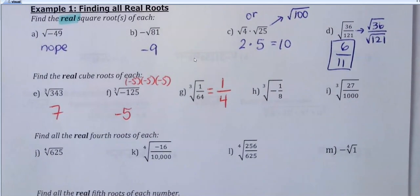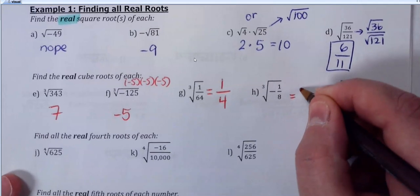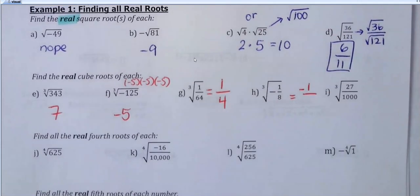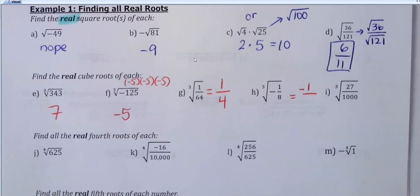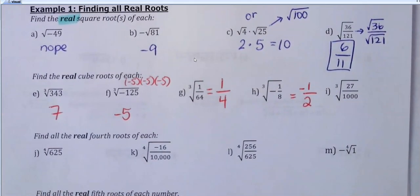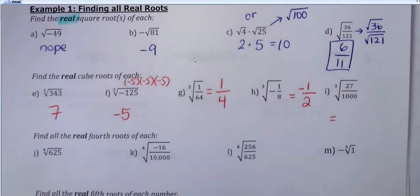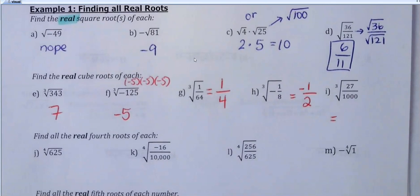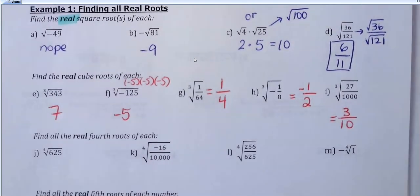I can do the next question because I can take the odd root of a negative number. So the cube root of negative 1 is just negative 1. The cube root of 8 is 2, so this one would be negative 1.5. And then I have the cube root of 27 over 1000 — feel free to look at that chart. The answer is three-tenths. Cube root of 27 is 3, cube root of 1000 is 10 — that's your answer.